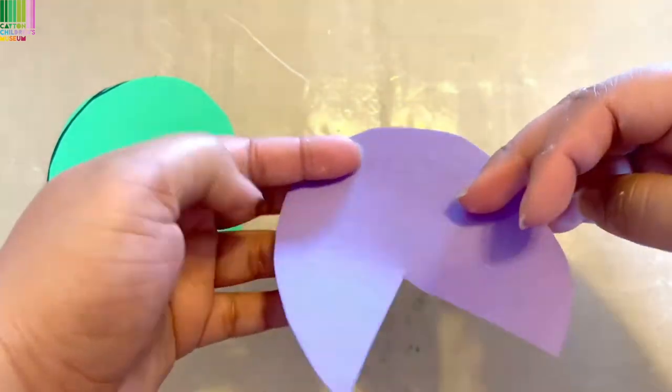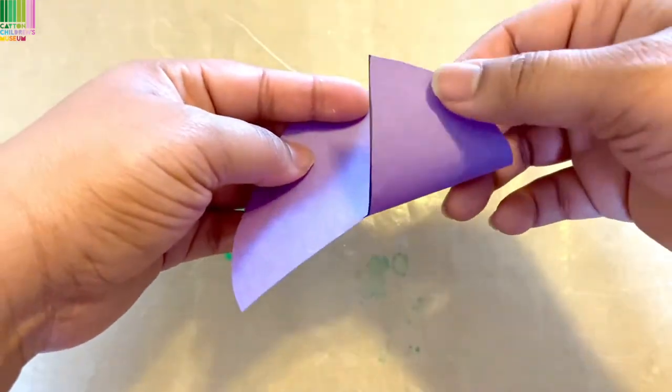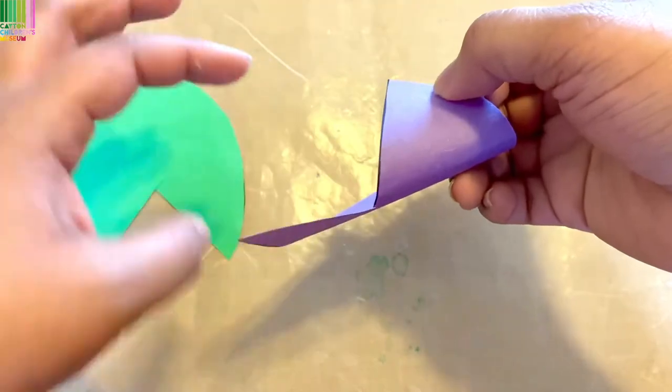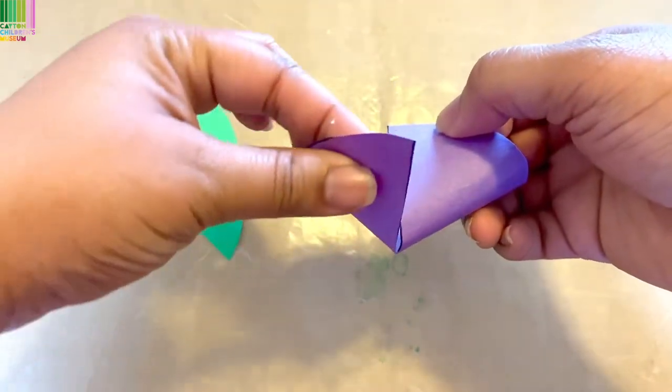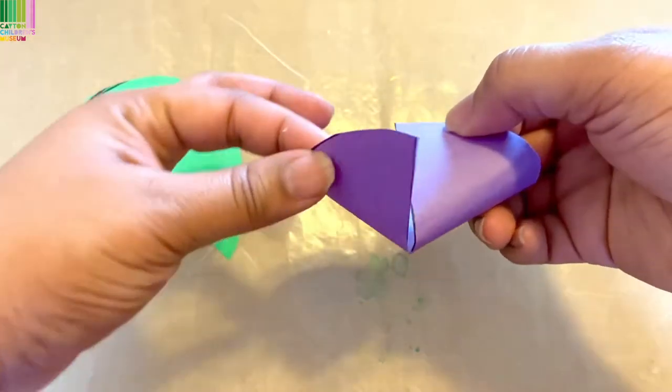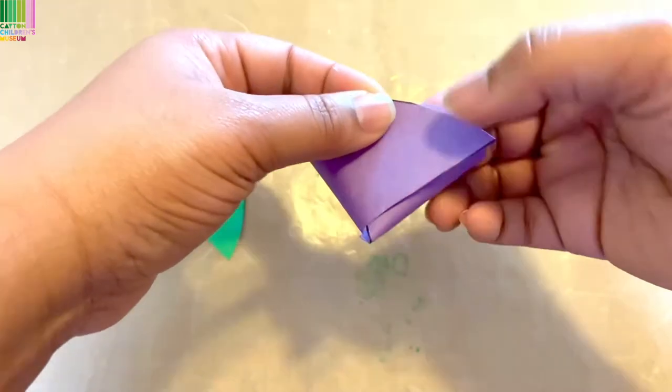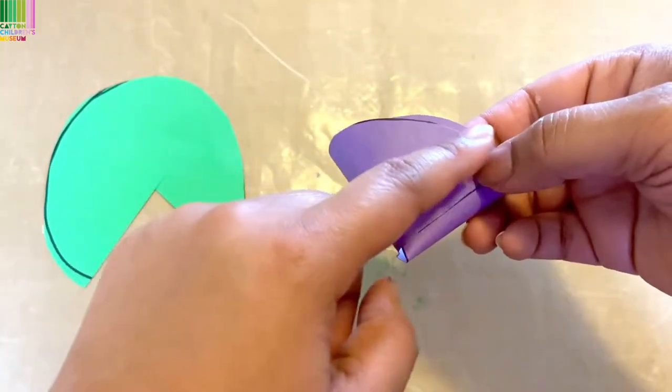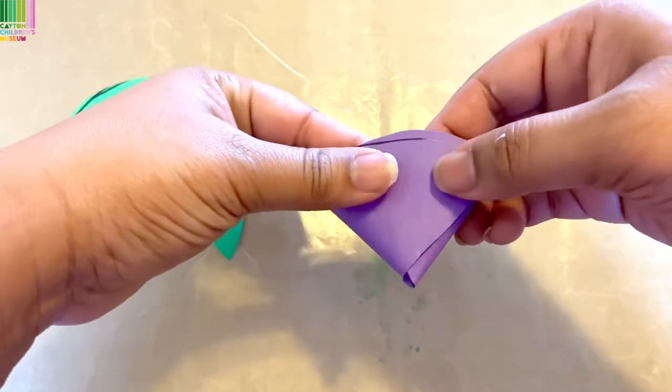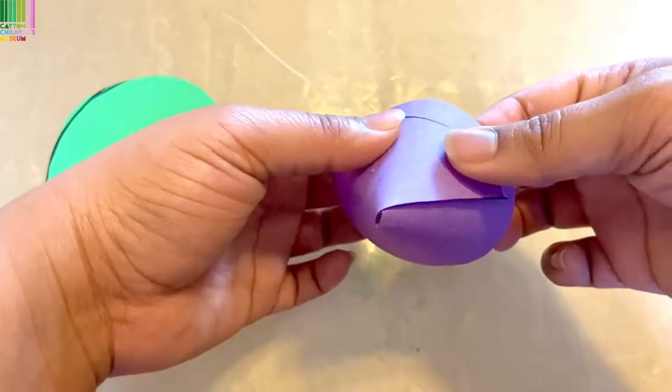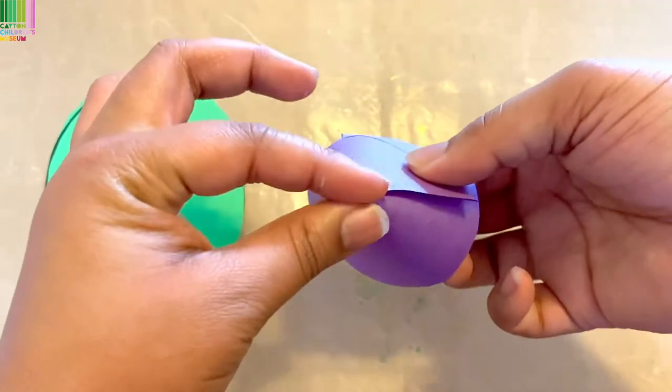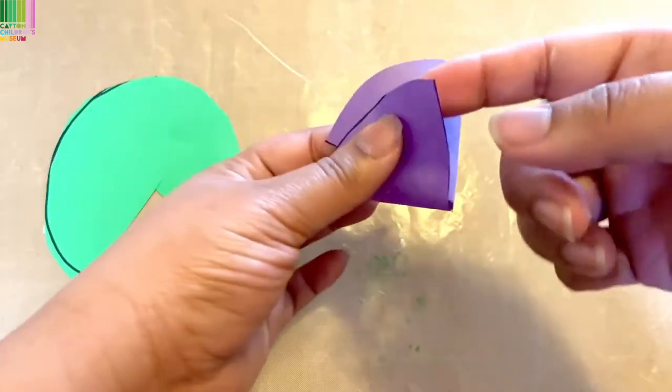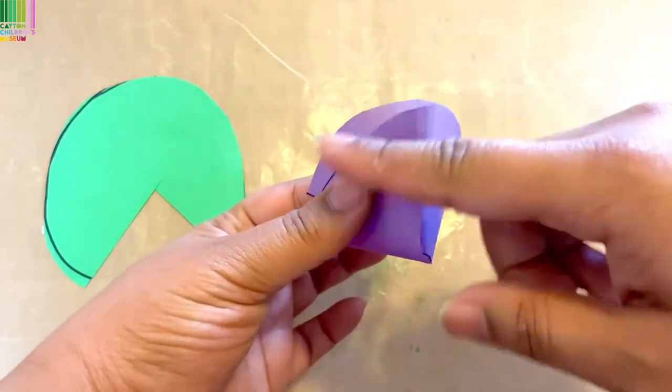Again, taking your paper, rolling it one way, taking this one and overlapping it, so you're pulling this over. And you want it to kind of align as best as you can. Now that you know how to fold the cone, you're going to go ahead and you want to grab some glue and glue it together.